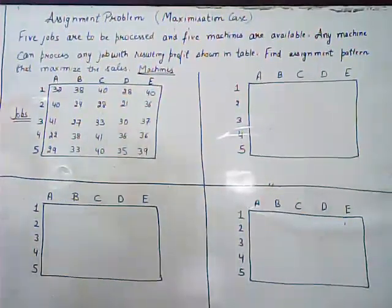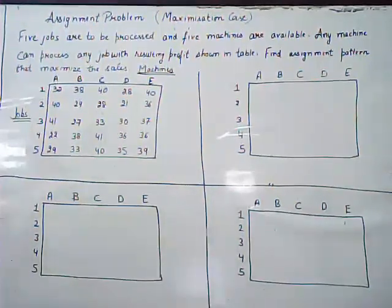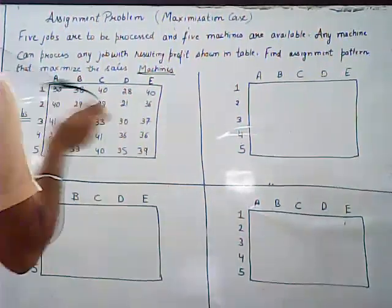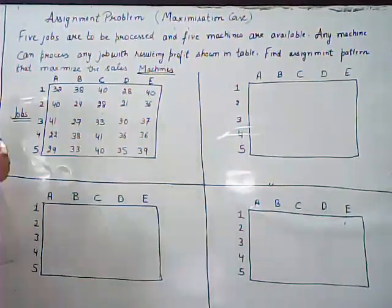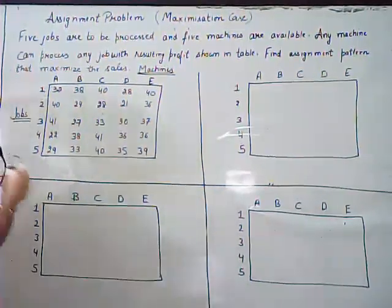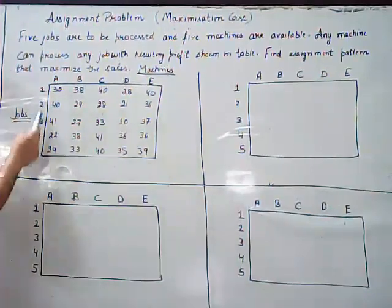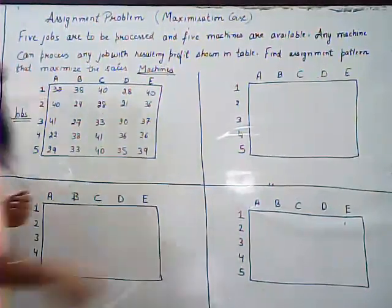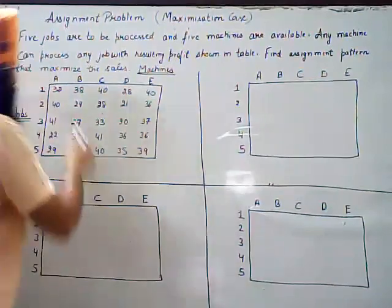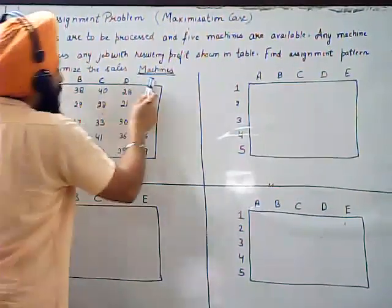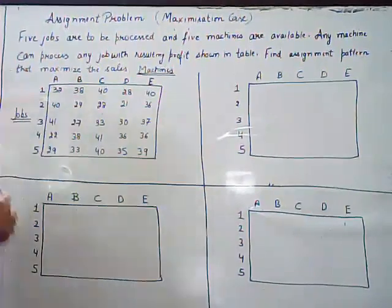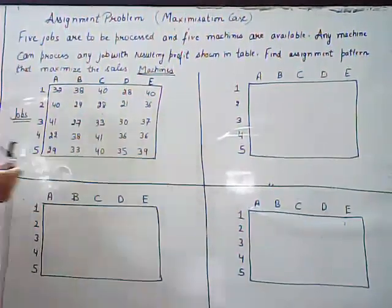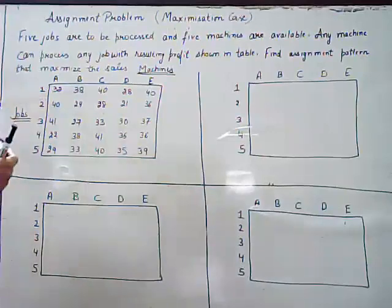Today's topic of discussion is the Assignment Problem, Maximization Case. Five jobs are to be processed and five machines are available. The jobs are numbered one through five and the machines are named A, B, C, D, and E. Any machine can process any job with the resulting profit shown in the table.